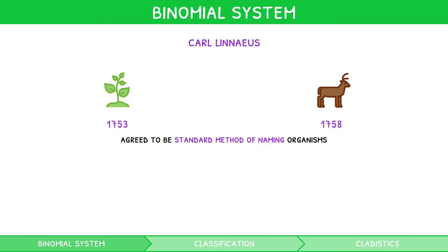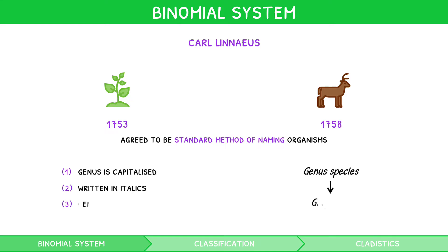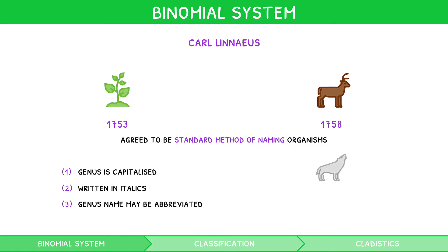But what actually is it? Well, this is a way in which species are named with a two-part name — the first of which is the genus name, and the second of which is the species name. There are three strict rules: the genus is capitalised and the species is not; the entire name is written in italics; and the genus name may be abbreviated to one letter if required. An example would be a grey wolf, Canis lupus, i.e. C. lupus.